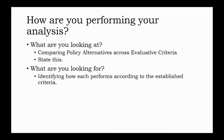On your worksheet, you have a few sub-questions that seem confusing on their face. First, what are you looking at and what are you looking for? What are you looking at? This is a simple statement that you're comparing three policy alternatives against each other — two options and the null — along the three criteria that you've chosen. What are you looking for? You're trying to identify how each alternative performs according to those established criteria.